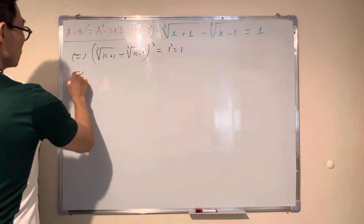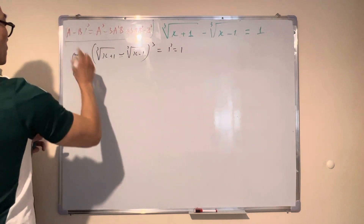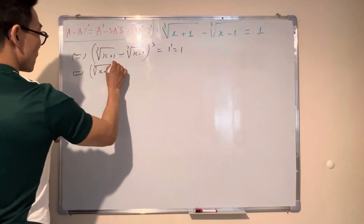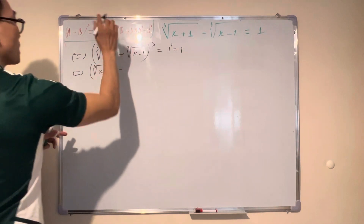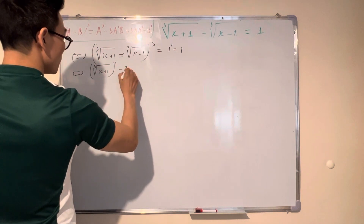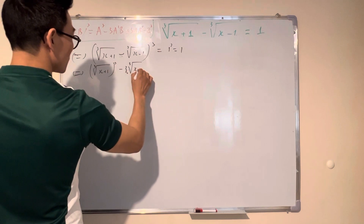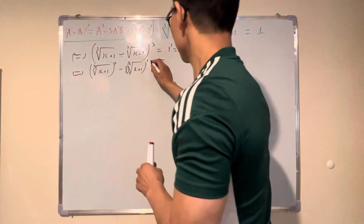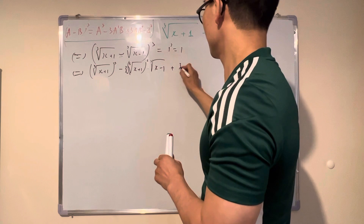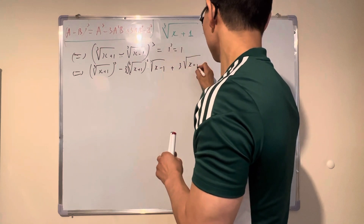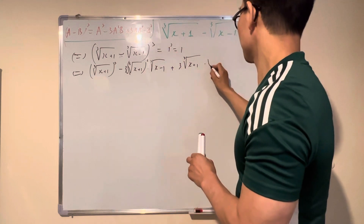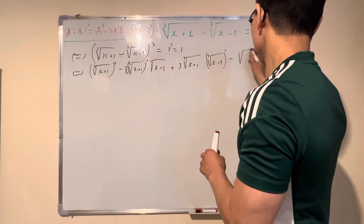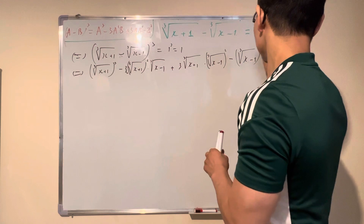So applying the formula where a equals cube root of (x+1): a³ minus 3a²b, which is 3 times (cube root of (x+1))² times b, plus 3a times b² which is 3 times (x+1) times (cube root) times b squared, then minus (x minus 1) cube root cubed equals one.